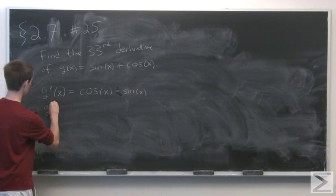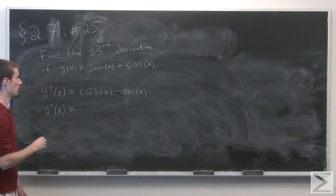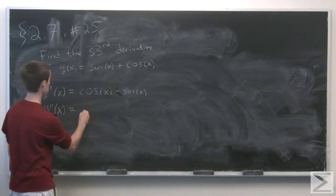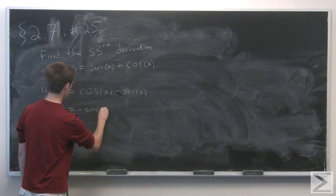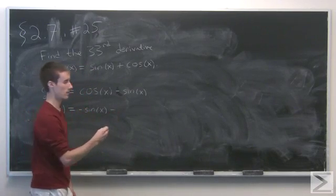Now g''(x), the second derivative: the derivative of cosine is minus sine, and the derivative of minus sine is minus cosine. So g''(x) = -sin(x) - cos(x).